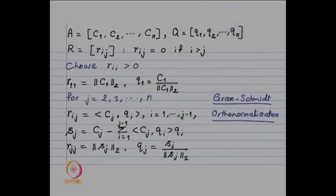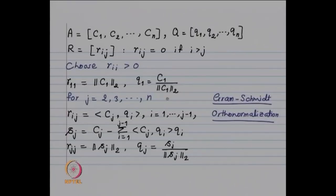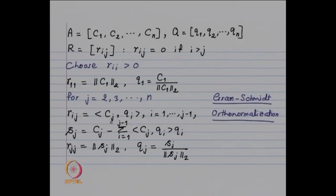What remains is to determine rjj and vector Qj. We saw that rij is the inner product of Cj with Qi. Substituting, we get Cj minus the sum of rij Qi (i from 1 to j-1) equals rjj Qj. Taking norms of both sides gives mod rjj equals the Euclidean norm of that vector. Once you determine rjj, Qj is determined from this expression.